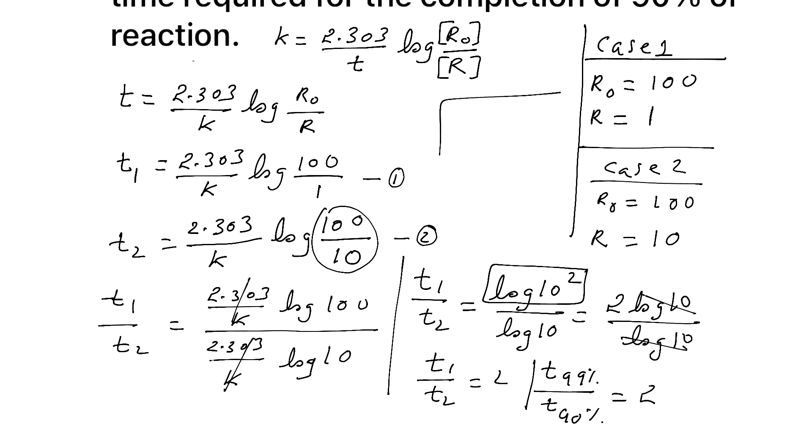Or you can say T99 percentage completion is equal to 2 times T90 percent completion. Perfect. Hope all of you understand very easy. So remember log 10 raised to X is X log 10 and log 10 is 1.